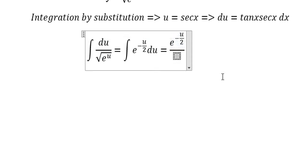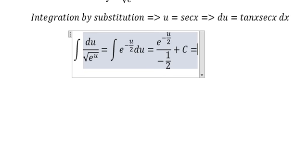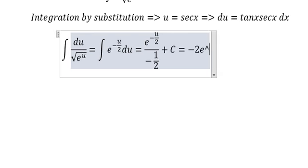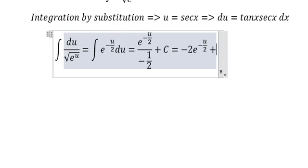In the denominator we have minus 1 over 2, plus c. This simplifies to minus 2 e to the power minus u over 2, plus c.